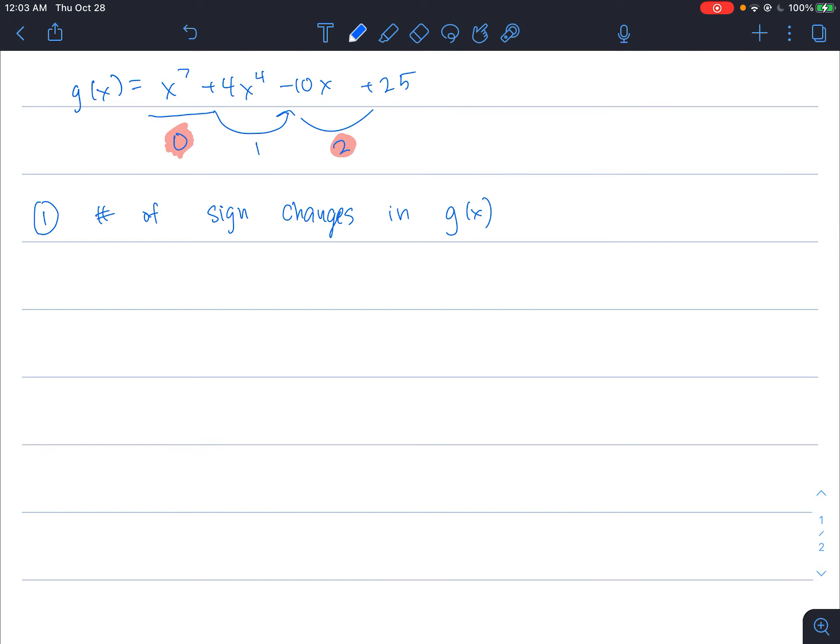Second is to find the number of sign changes in g of negative x. Let's find what g of negative x would be. Negative x means we are going to change all the x's to negative. For example, if I plug in negative x into x to the seventh, negative x to the seventh tells me I'm multiplying negative x by itself seven times over, which would leave me with negative x to the seventh.